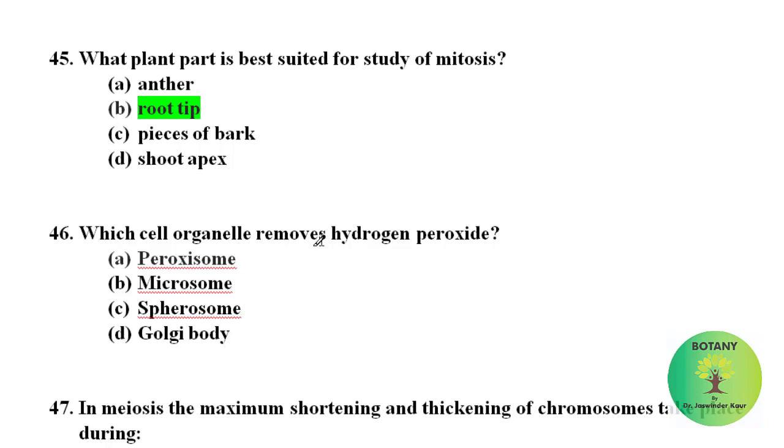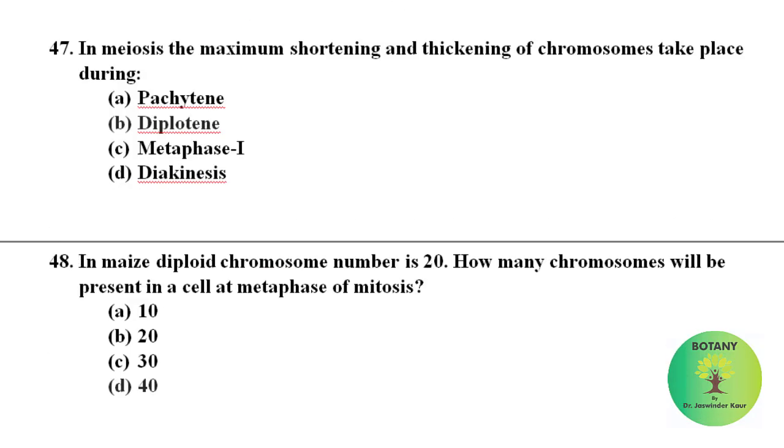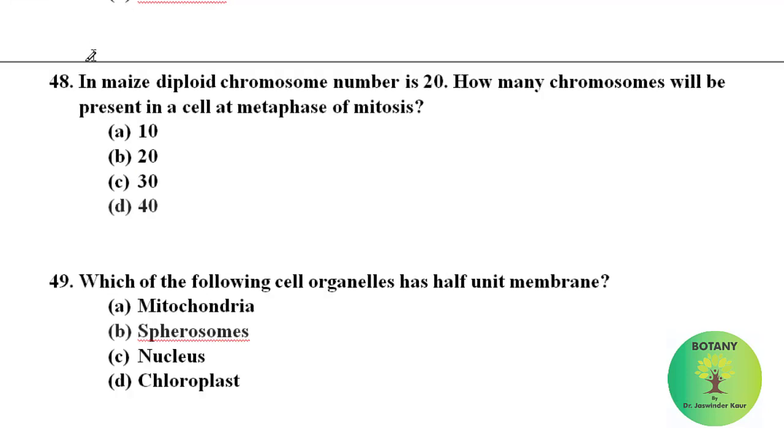Which cell organelle removes hydrogen peroxide? Hydrogen peroxide is removed by peroxisomes. In meiosis, the maximum shortening and thickening of chromosome takes place during the diplotene stage of meiosis. In maize, diploid chromosome number is 20. How many chromosomes will be present in a cell at metaphase of mitosis? At metaphase the chromosomes are arranged at equator and thus their number is double, so there will be 40 chromosomes.